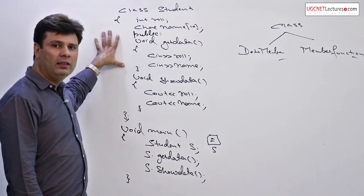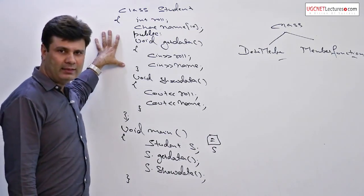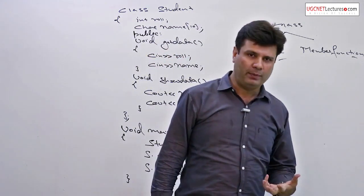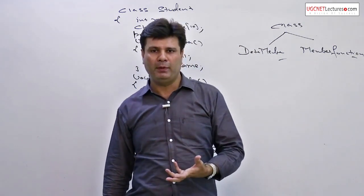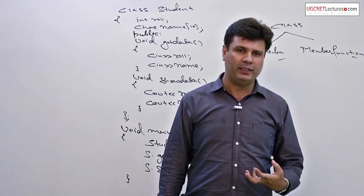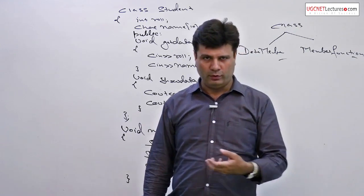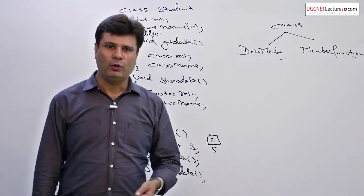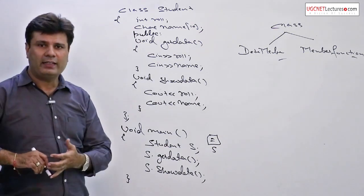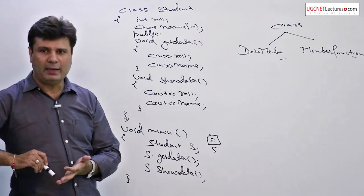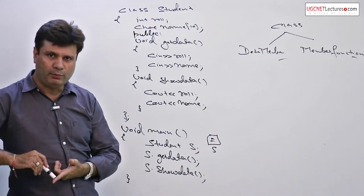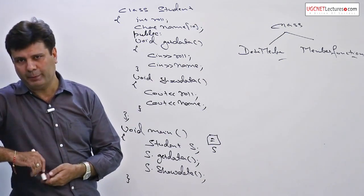With this example, let us discuss the features of OOP — object-oriented programming, which is fully the implementation of objects and classes. There are five features of object-oriented programming: the first is data encapsulation, the second is data abstraction, the third is inheritance, the fourth is polymorphism, and the fifth is modularity.